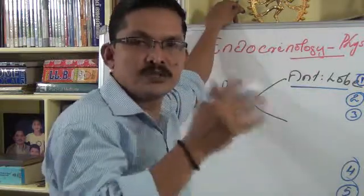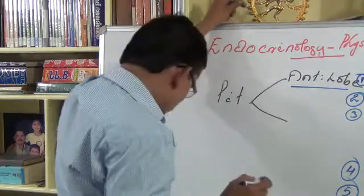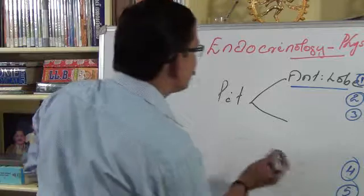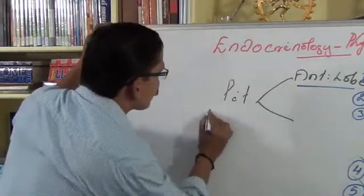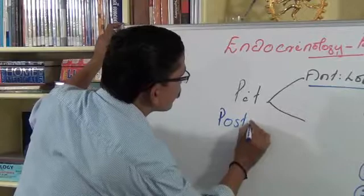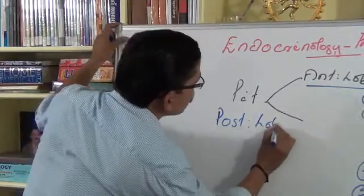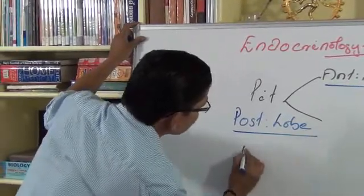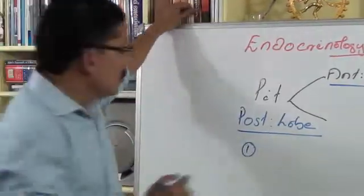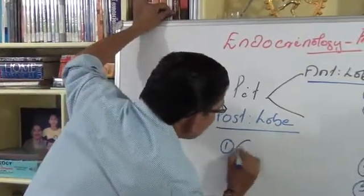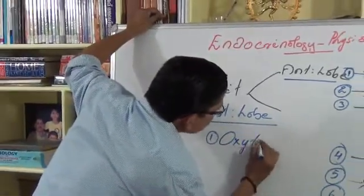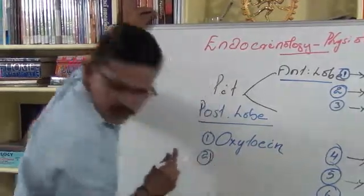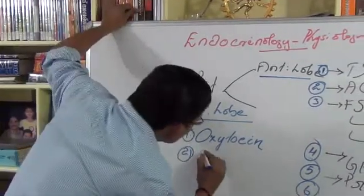And next about the posterior lobe. Posterior lobe of the pituitary secretes number one, oxytocin, and number two, anti-diuretic hormones.